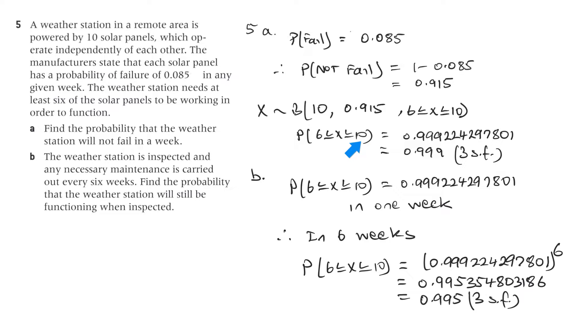And so we have that using the GDC CDF and we put it in like that. So in the Inspire, we put the ten comma with this probability here and then from six to ten. And that would be the answer there, which is 0.999224297801, which is 0.999 to three significant figures.